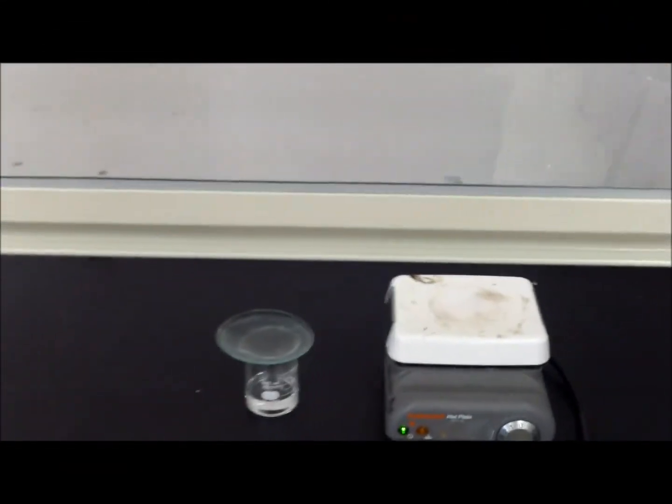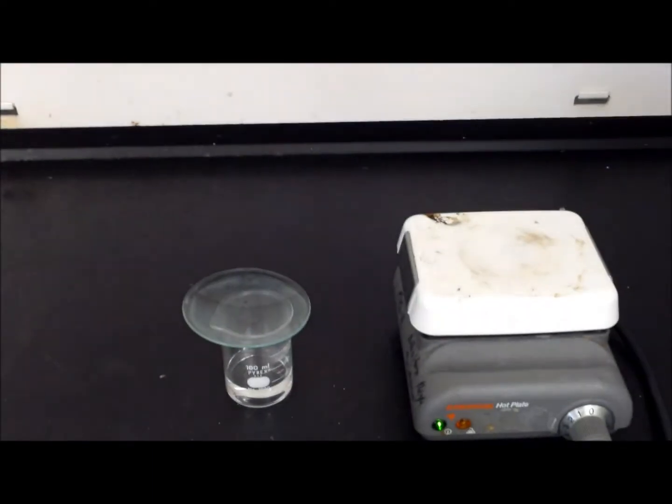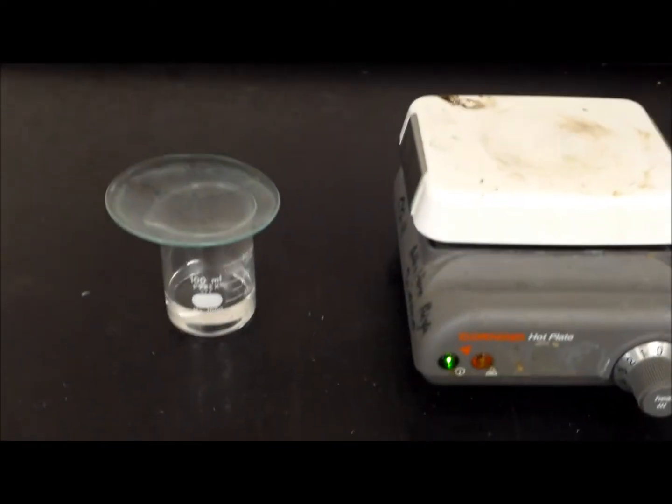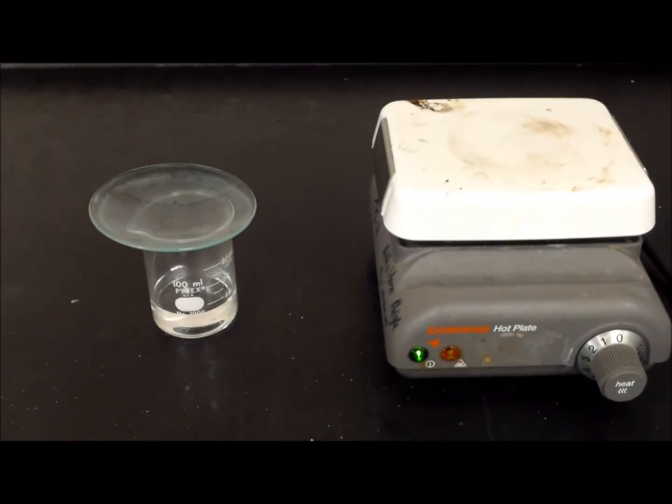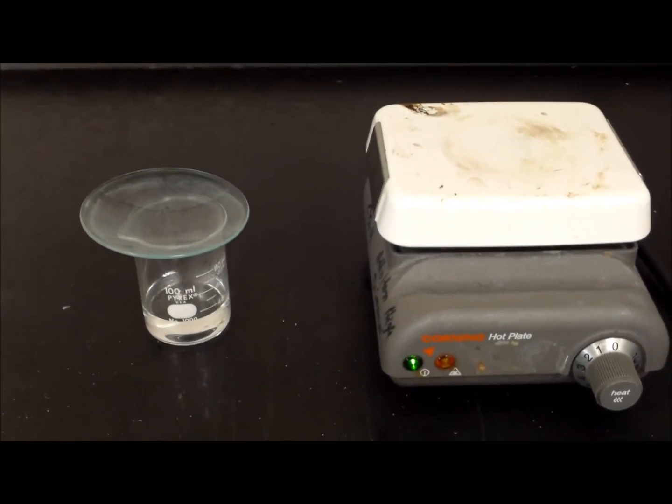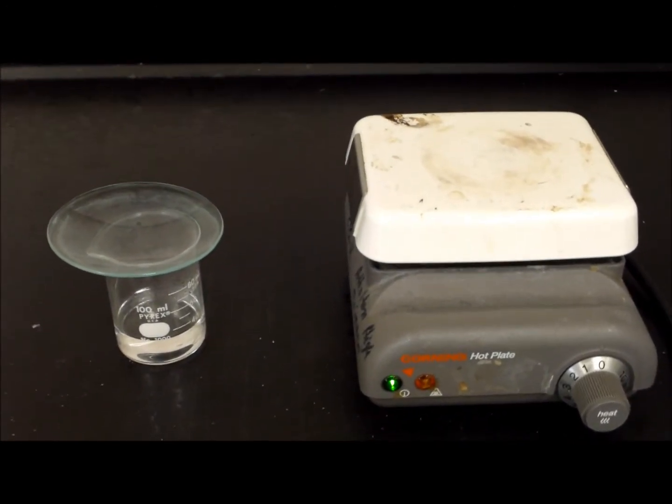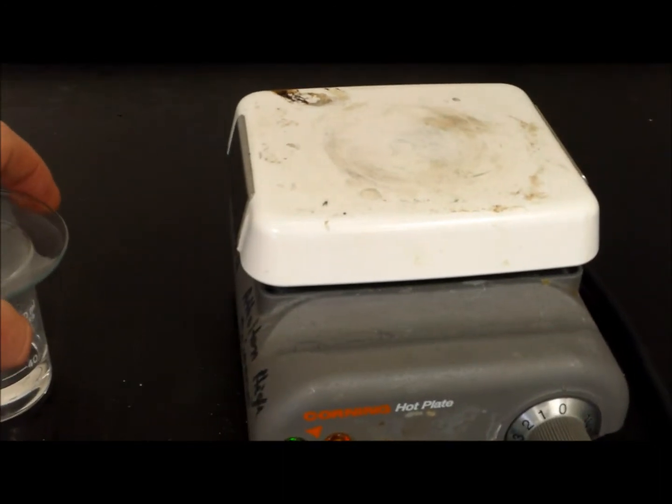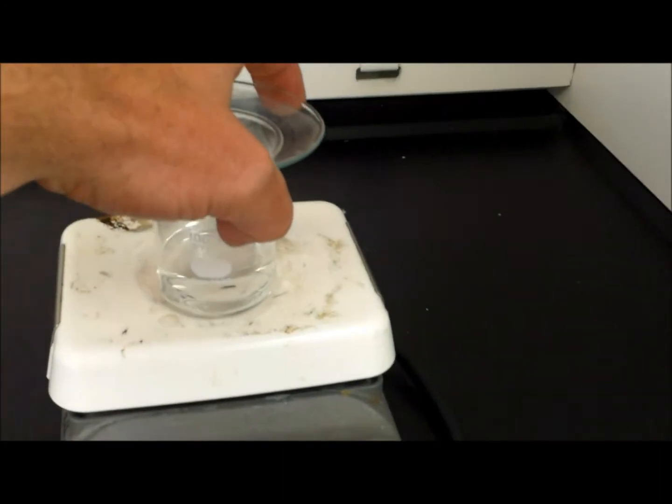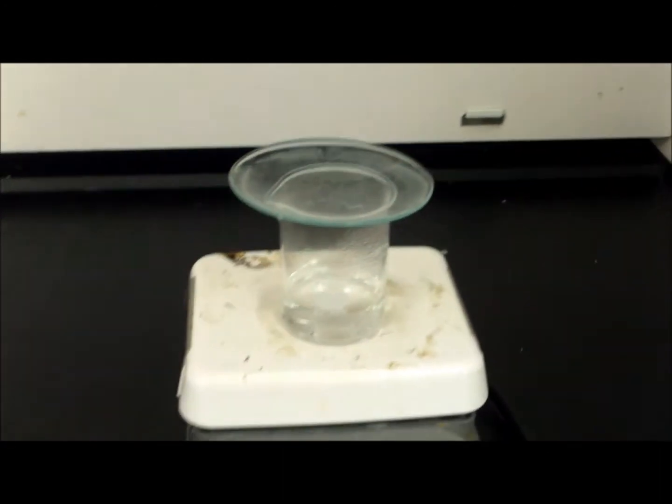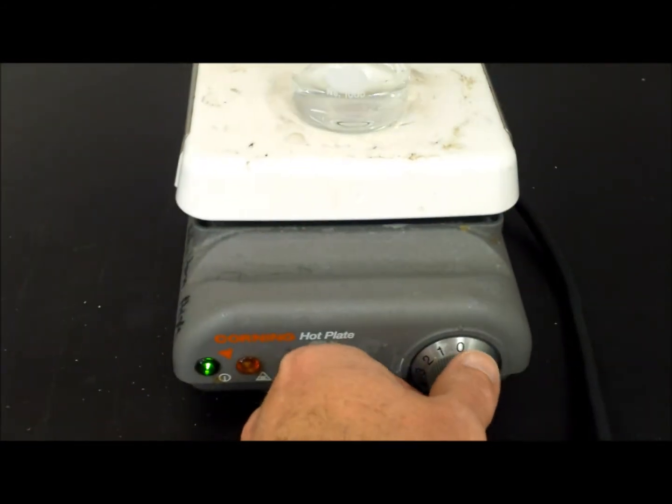There's a possibility that there is some unreacted hydrochloric acid still in the beaker. So when we heat this, if there's unreacted hydrochloric acid, that could go into the air and that's not something that we'd want to breathe in. So I'm going to go ahead and place this beaker with a watch glass on top just to control any spattering, and I'm going to go ahead and start heating this.